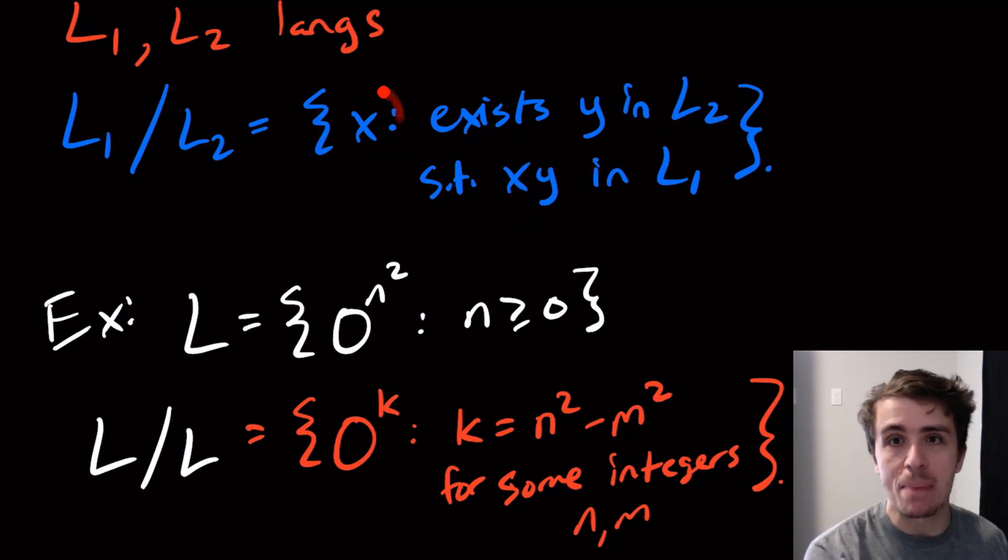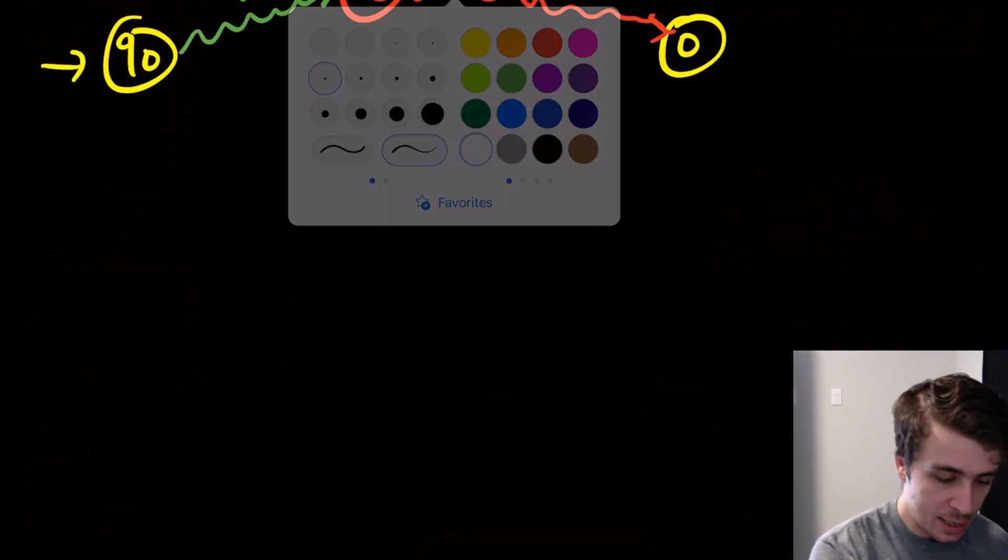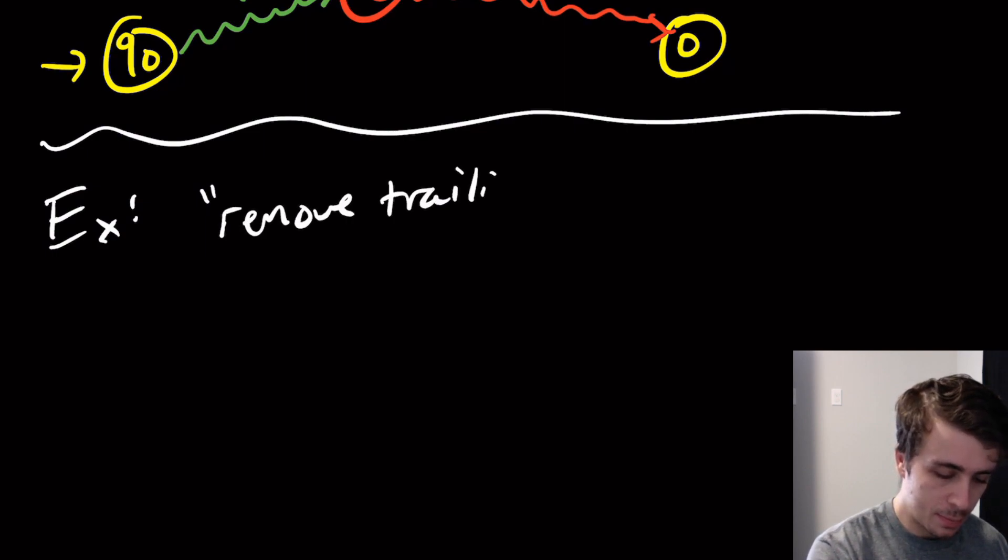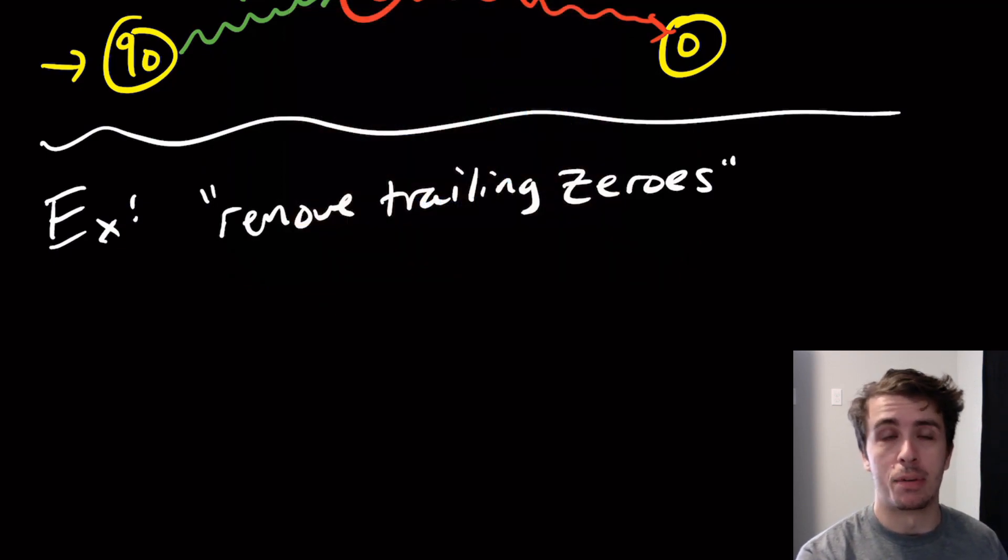Let's do an example of this. Here we're going to do an example which is based on removing white space in some sense, but instead of white space we're going to remove a single character from all the strings on the end. We're going to do something called remove trailing zeros.